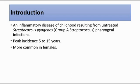Streptococcus pyogenes is a beta-hemolytic group A streptococcus. For the peak incidence, it is usually seen in 5 to 15 year olds and it is more common in females compared to males.